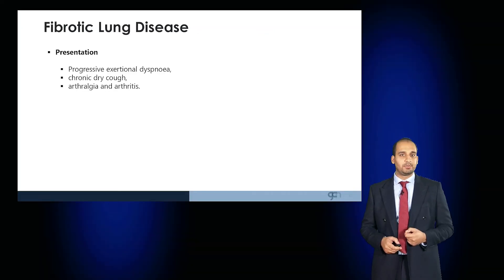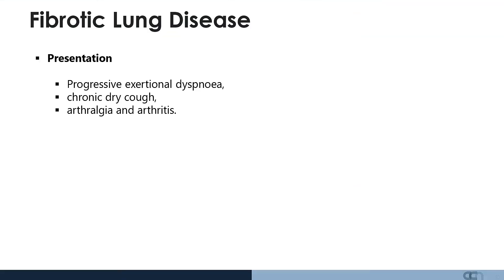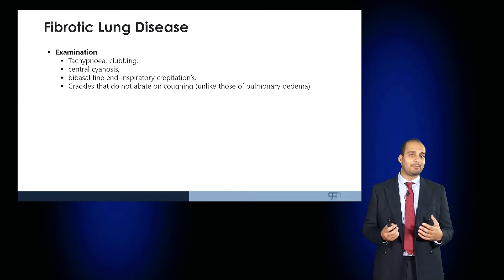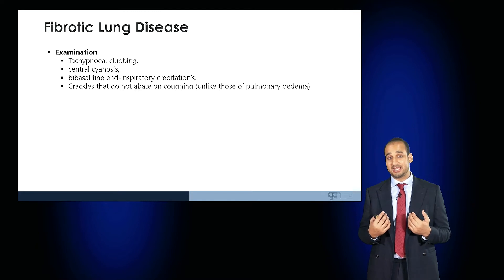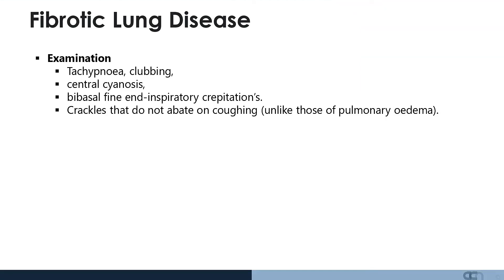Patients will present with progressive exertional dyspnea, a chronic dry cough, and may have extra-respiratory symptoms such as arthralgia and arthritis. On examination, patients may be tachypneic, clubbed, centrally cyanosed, and have bibasal fine end-inspiratory crepitations. These crackles do not abate on coughing, unlike those of pulmonary edema or pneumonia.